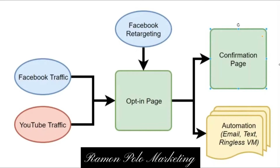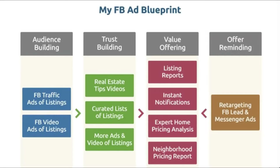I just showed you the opt-in page in the middle of this funnel. We drive Facebook traffic and also YouTube traffic, which is very effective nowadays — I recommend doing both. We retarget the people who land on the page by capturing their information so we can then run Facebook retargeting ads to them. We send them to the confirmation page, and with an opt-in or landing page like this we can track every single step and then do automation with email and text messaging. We have templates so you can send texts to your leads automatically or manually, depending on your technology.